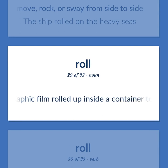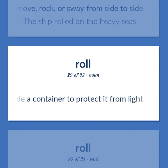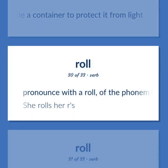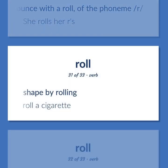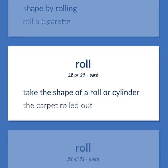Pronounce with a roll, of the phoneme r — 'She rolls her r's.' Shape by rolling — 'Roll a cigarette.' Take the shape of a roll or cylinder — 'The carpet rolled out.' Walking with a swaying gait.